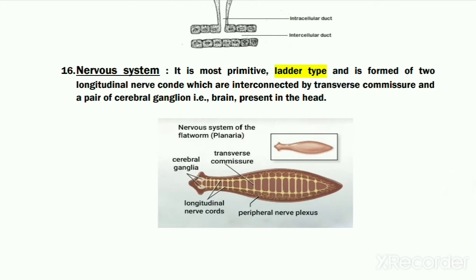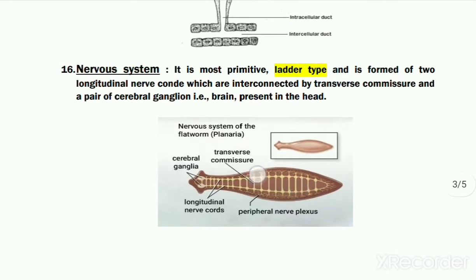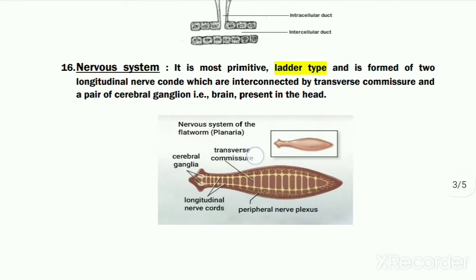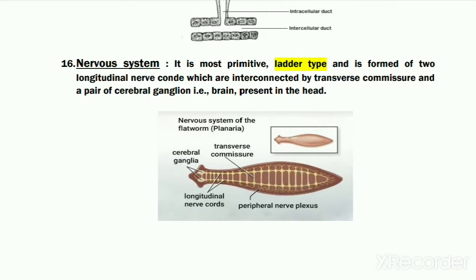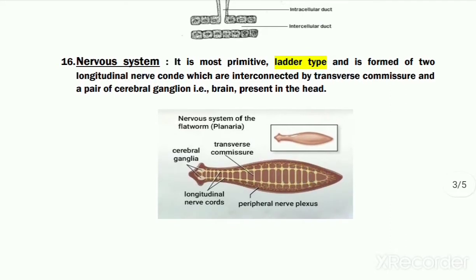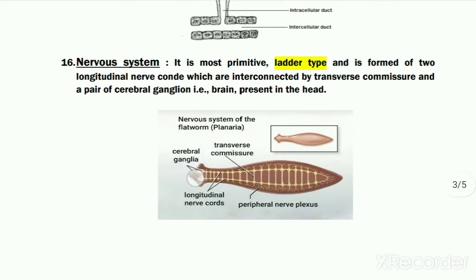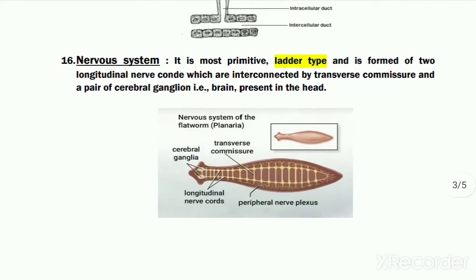The nervous system of flat worms consists of two longitudinal nerve cords which are interconnected to each other by numerous transverse commissures, so the nervous system appears like a ladder and is referred to as the ladder-type nervous system. This whole nervous system is coordinated by one pair of cerebral ganglia present in the head region.